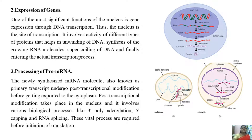The second function is expression of the gene. One of the most significant functions of the nucleus is gene expression through DNA transcription. The nucleus is the site of transcription. It involves the activity of different types of proteins that help in unwinding of DNA, synthesis of the growing RNA molecule, supercoiling of DNA, and finally the actual transcription process — that is the synthesis of all three types of RNA: mRNA, rRNA, and tRNA — where mRNA has a role in the translation process.